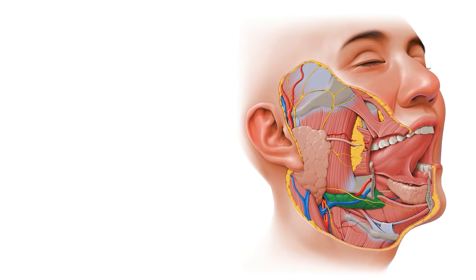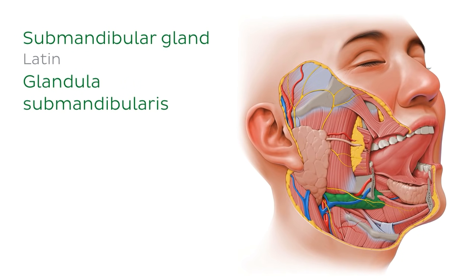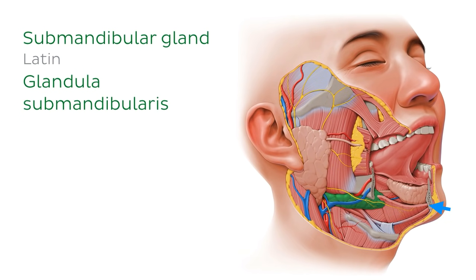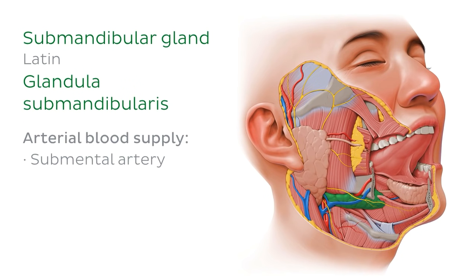Let's move on to the next major salivary gland, which is the submandibular gland. This one is situated close to the sublingual gland. The submandibular glands are located both superiorly and inferiorly to the inner aspect of the mandible, in the submandibular triangle of the neck — now highlighted in green — which is also known as the digastric triangle. You can see the mandible cut and its relation to the submandibular gland. The submandibular gland shares the same arterial blood supply as the sublingual gland: the submental artery, a branch of the facial artery, and the sublingual artery, a branch of the lingual artery.